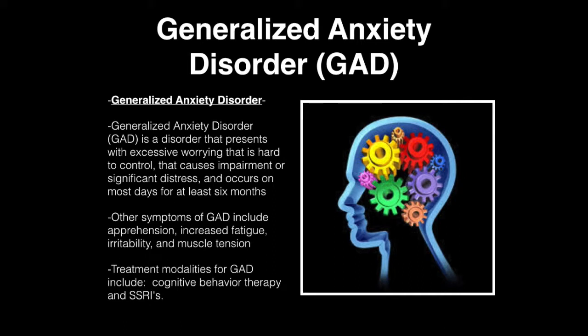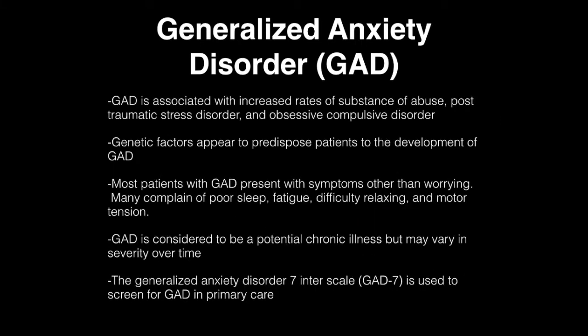Generalized anxiety disorder is characterized as a disorder that presents with excessive worrying that is hard to control, sometimes causes impairment and significant distress, and occurs on most days for at least six months. Other symptoms include apprehension, increased fatigue, irritability, and muscle tension. Generalized anxiety disorder is associated with increased rates of substance abuse, post-traumatic stress disorder, and obsessive-compulsive disorder.